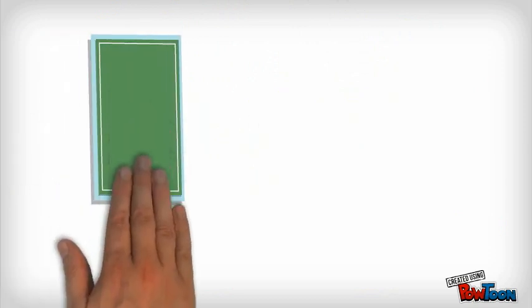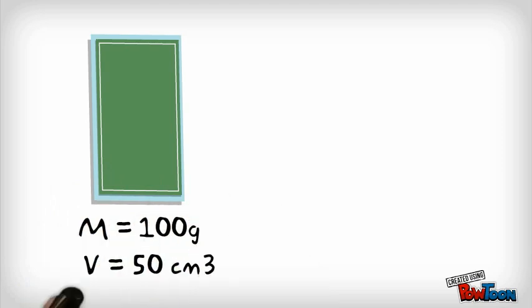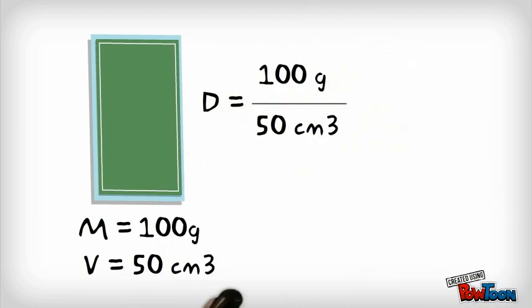Let's take a look at this figure. This rectangle, let's say that it has a mass of 100 grams and a volume of 50 cubic centimeters. If we use the formula and we do mass divided by volume, we calculate that the density is 2 grams per cubic centimeter.